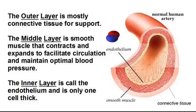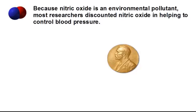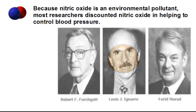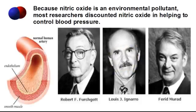Nitric oxide acts as a signaling molecule, meaning it's used by the body to cause something else to occur. Because nitric oxide is an environmental pollutant, most researchers discounted nitric oxide in helping to control blood pressure. However, the 1998 Nobel Prize in Medicine was awarded to three American researchers who discovered how your endothelial cells convert the semi-essential amino acid L-arginine into nitric oxide, and how nitric oxide relaxes the smooth muscle in your vascular wall to improve blood flow.